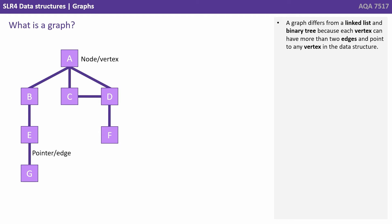A graph differs from a linked list and a binary tree because each vertex can have more than two edges and point to any vertex in the data structure.